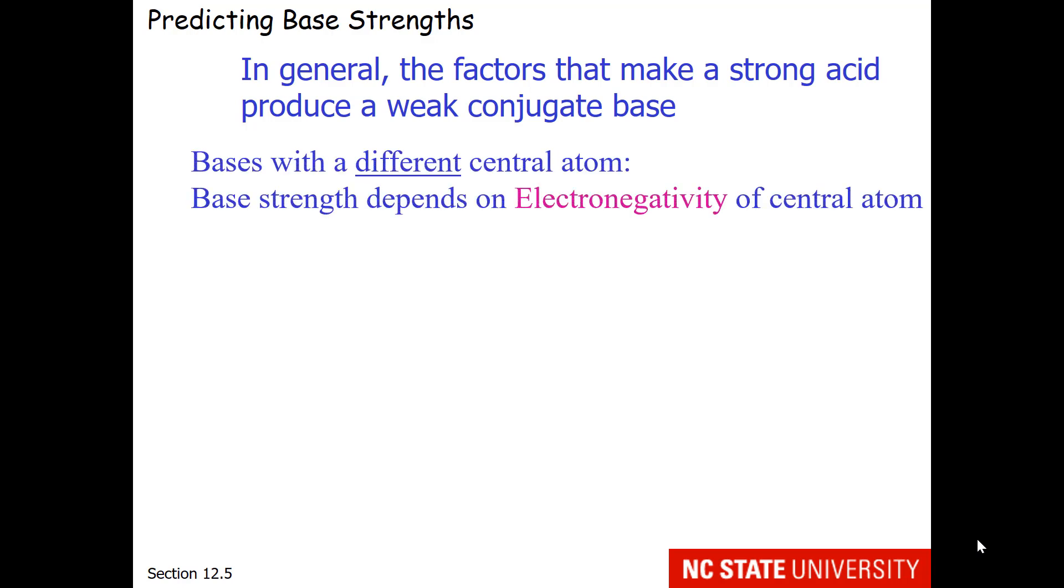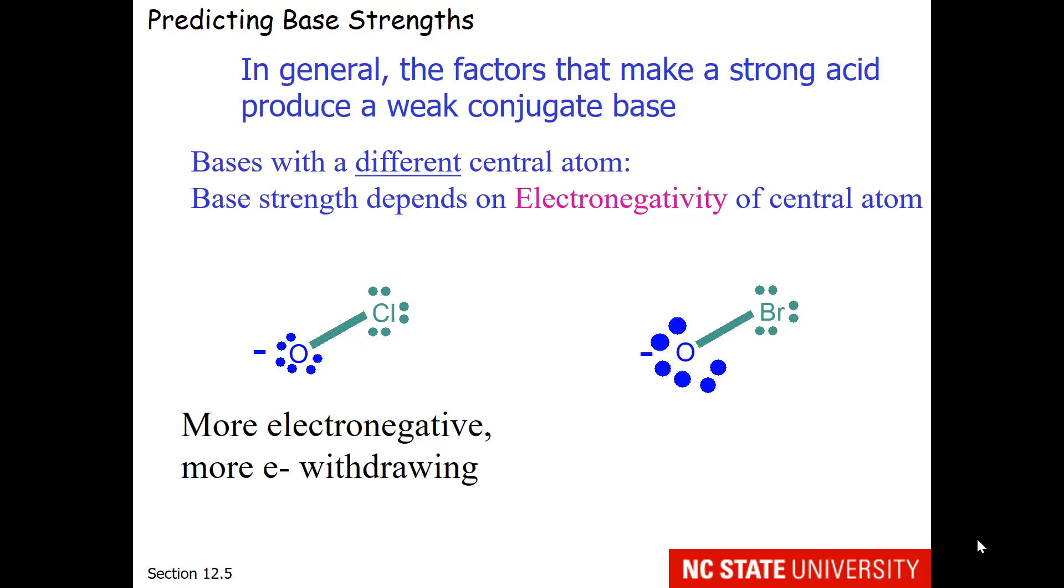Let's look at an example of bases with a different central atom. Base strength is going to depend upon the electronegativity of the central atom. For example, let's compare the base strength of the hypochlorite versus the hypobromite ion. Chlorine is more electronegative than bromine is, so therefore it's more electron withdrawing, taking electron density away from the oxygen.